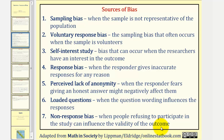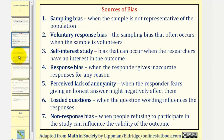I do want to go back up to response bias just for a moment. Notice how response bias could occur because of number five and number six. Again, response bias is when responders give inaccurate responses for any reason. Let's take a look at several examples.